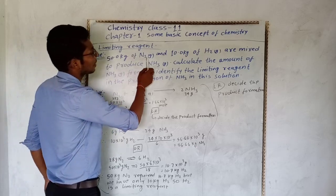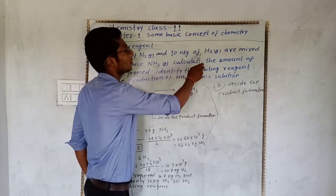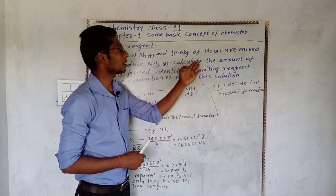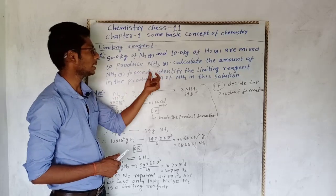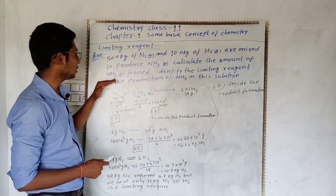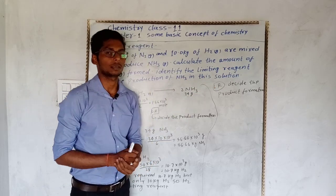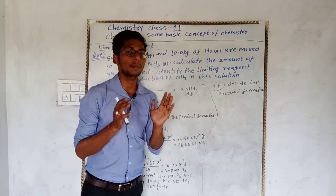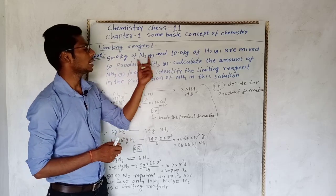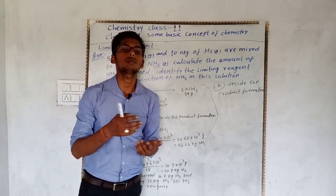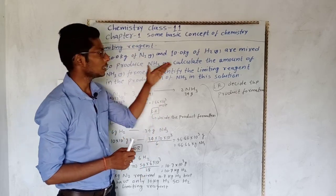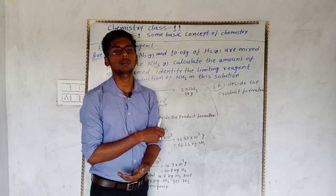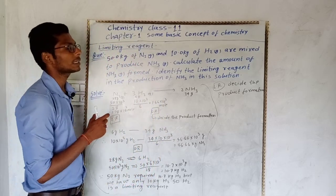यह NCERT book का question है। जब हम 50 kg N2 को 10 kg H2 से mix करते हैं तो ammonia produce होता है। पूछ रहा है कितना ammonia produce हो रहा है, उसका amount find करना है। और question में यह भी पूछ रहा है कि reaction में N2 और H2 में से limiting reagent कौन है। इसको हम 3 तरह के method से solve करेंगे।